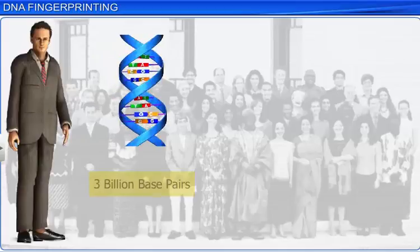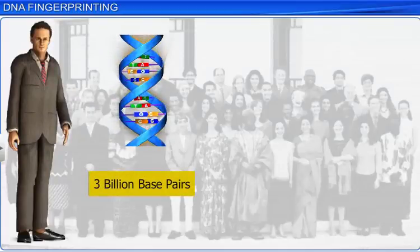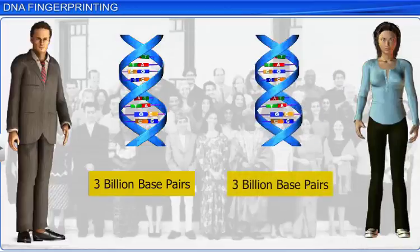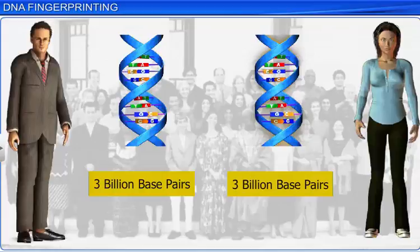The human genome has about 3 billion base pairs. Therefore, it would be a time-consuming and expensive task to find out the genetic difference between two individuals, as it would require comparing two sets of 3 billion base pairs.